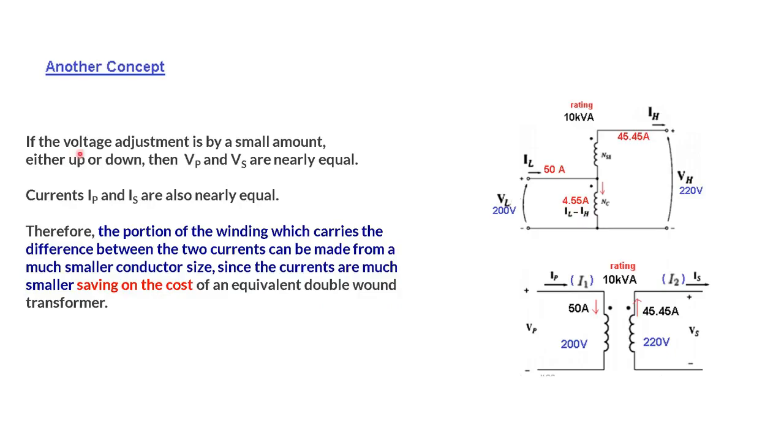Here the voltage adjustment is by small amount either up or down. VP and VS are nearly equal. The currents IP and IS are also nearly equal. Therefore the portion of the winding which carries the difference between the two currents can be made from a much smaller conductor size. Since the currents are much smaller saving on the cost of an equivalent double wound transformer.